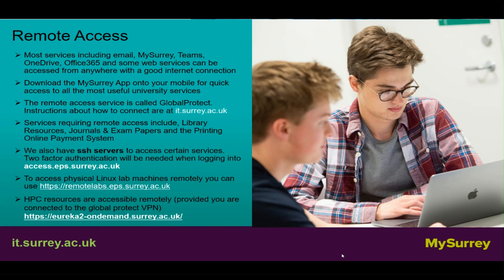Remote access: most services including email, My Surrey, Teams, OneDrive, Office 365 and some web services can be accessed from anywhere with a good internet connection. Download the My Surrey app onto your mobile for quick access to all the most useful University services. The remote access service is called Global Protect. Instructions about how to connect are on My Surrey. Services requiring remote access include library resources, journals, exam papers and the printing online payments system.